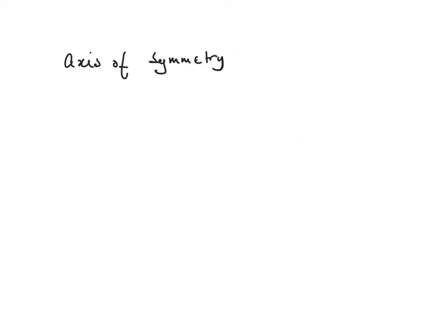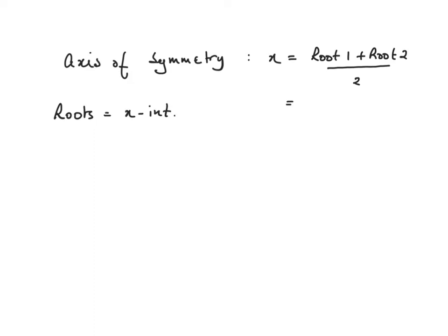The third thing we do is work out the equation of the axis of symmetry. There's a formula we can use: x equals root 1 plus root 2 over 2. When I talk about roots, I mean the x-intercepts. We know there's one root at 2 and another at minus 4. So we have minus 4 plus 2, divided by 2, which is minus 2 over 2. That means the axis of symmetry has equation x equals minus 1.